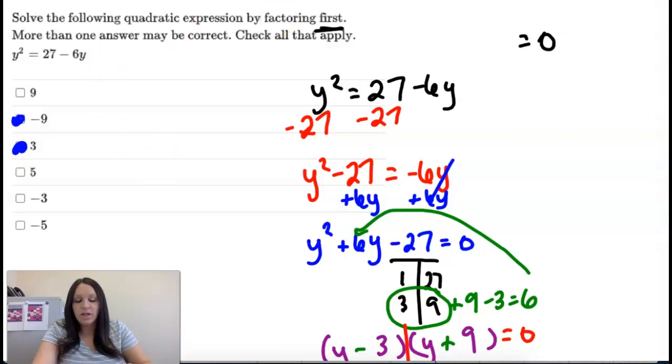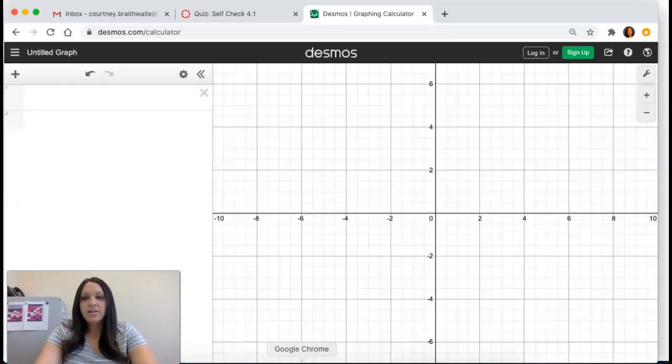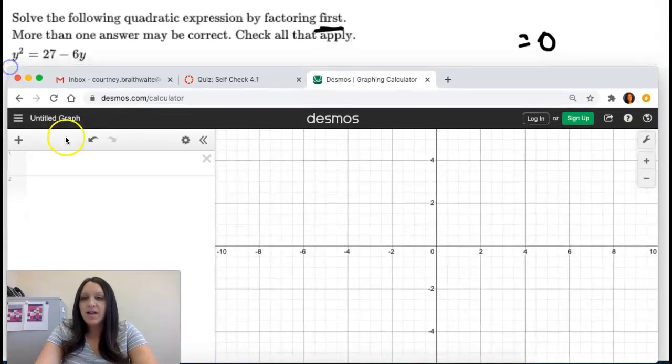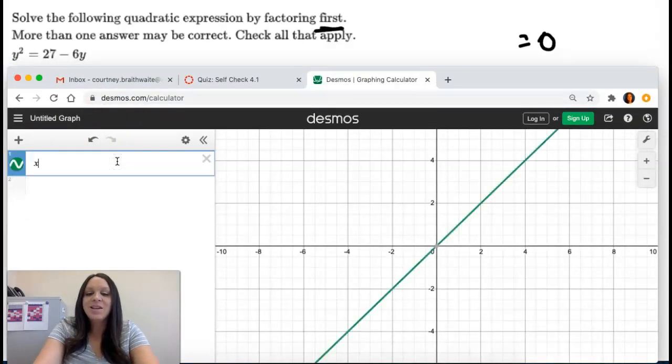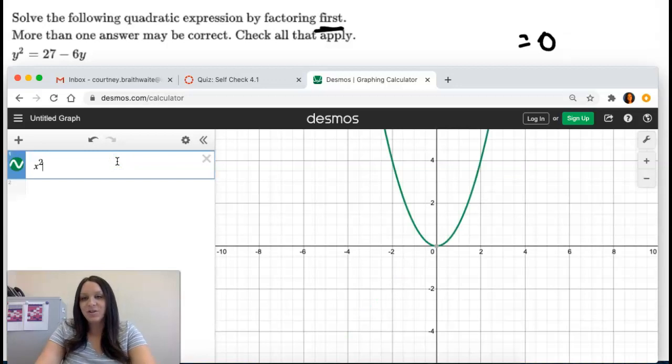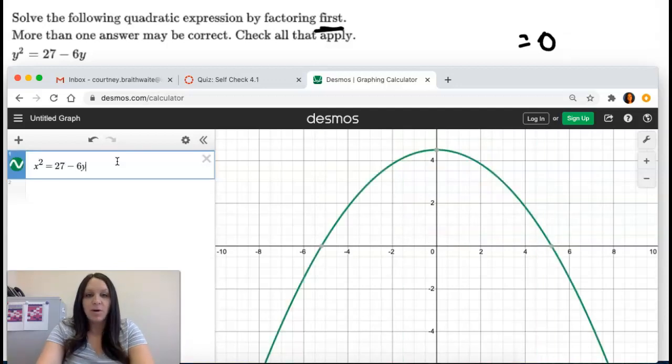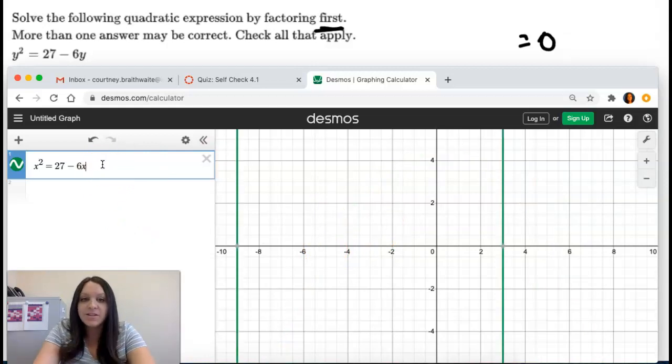So we can graph it and check. A heads up when you put things in Desmos, it only likes when you use x as your variable. If you put y in there, it's not going to work. So x squared equals 27 minus 6x. So 3 and negative 9.